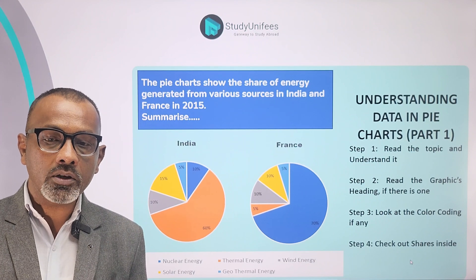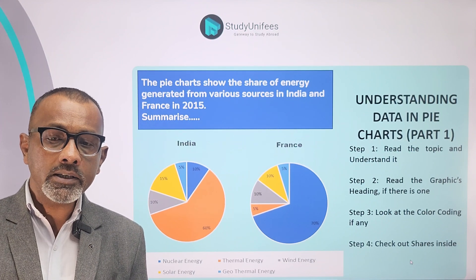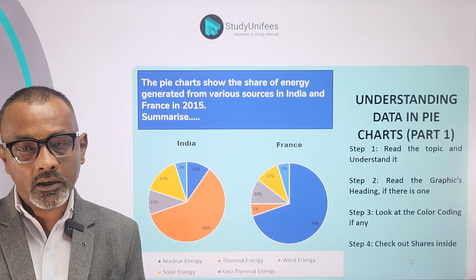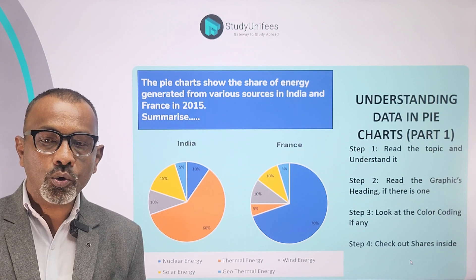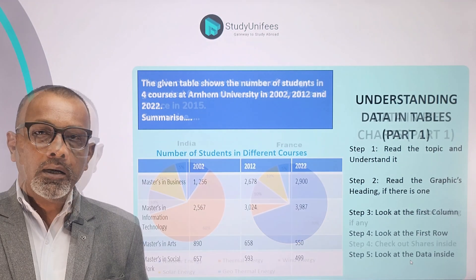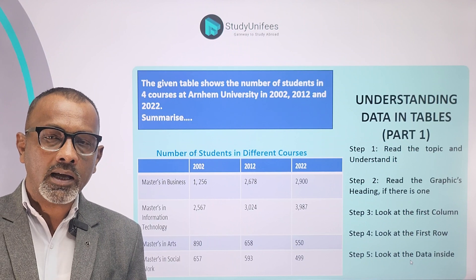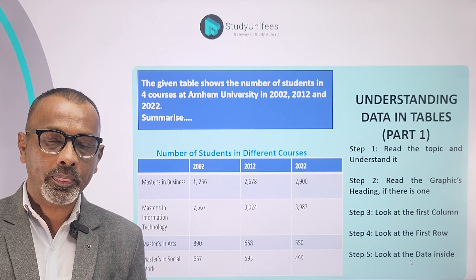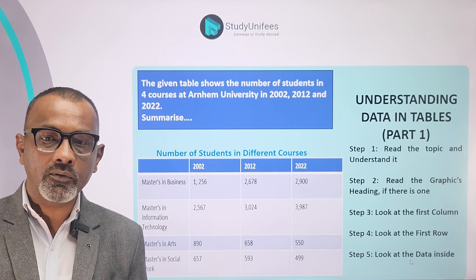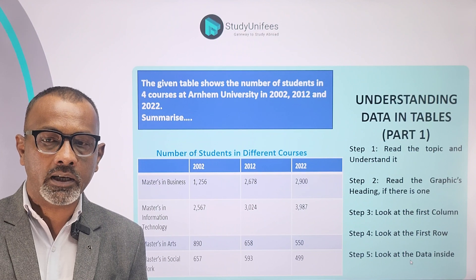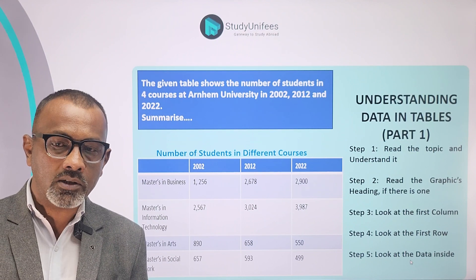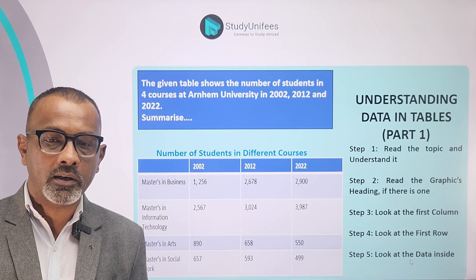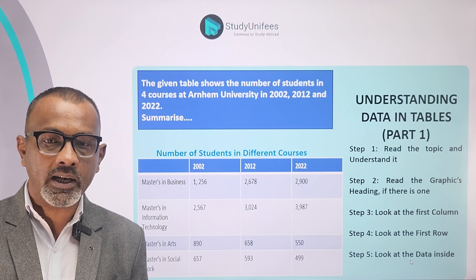Step number 4: check out the shares inside. India's pie chart shows a very large share for thermal energy, while France's pie chart shows a very large percentage for nuclear energy. Now let's look at a table. Step 1: read the topic. The given table shows the number of students in 4 courses at Anham University in 2002, 2012, and 2022 — simple numbers portrayed across four different courses at one university.